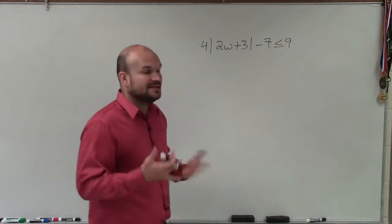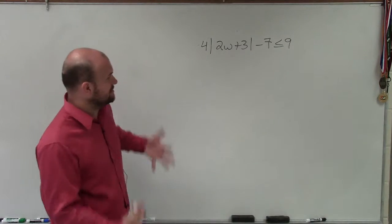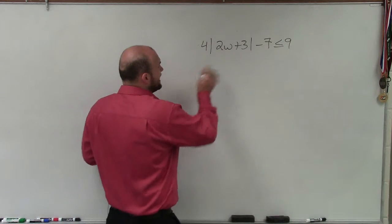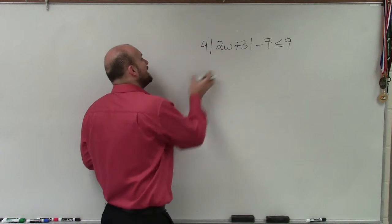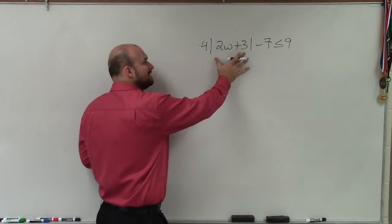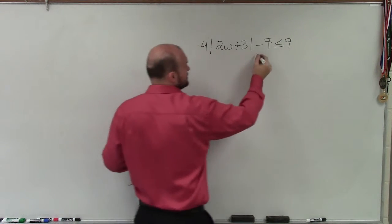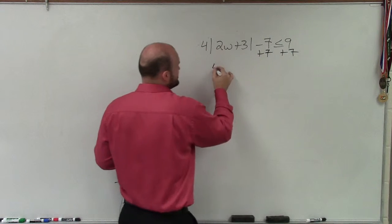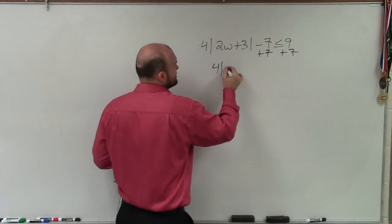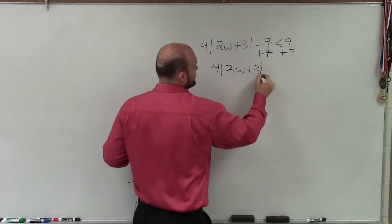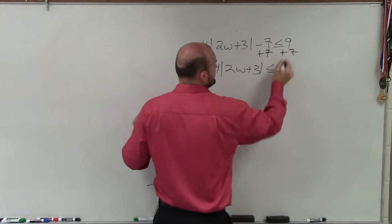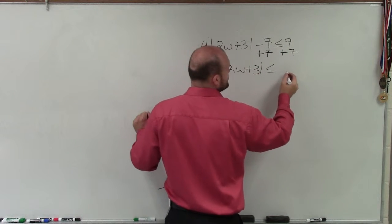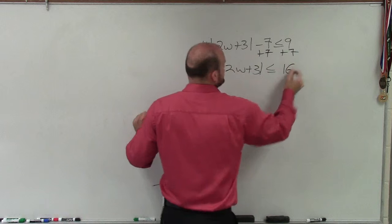To do this, we need to create our two cases. But before we create our two cases, we've got to isolate the absolute value. To do that, I need to undo all the operations happening to this absolute value expression. The first thing I'm going to do is undo addition and subtraction. So I have 4 times the absolute value of 2w plus 3, which is less than or equal to 9, plus 7, which gives us 16.